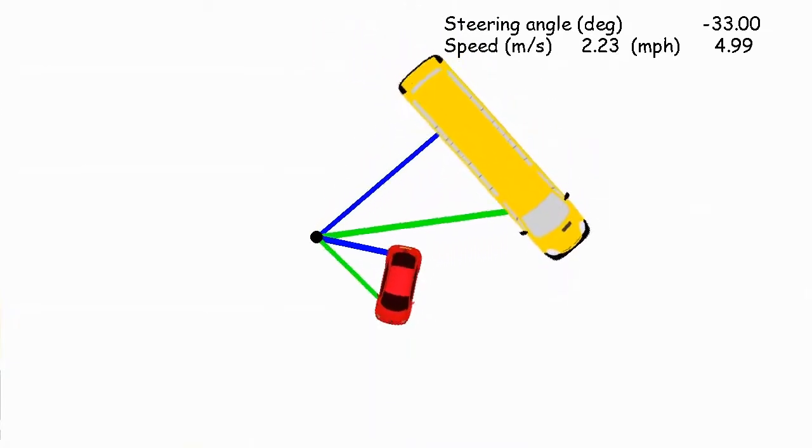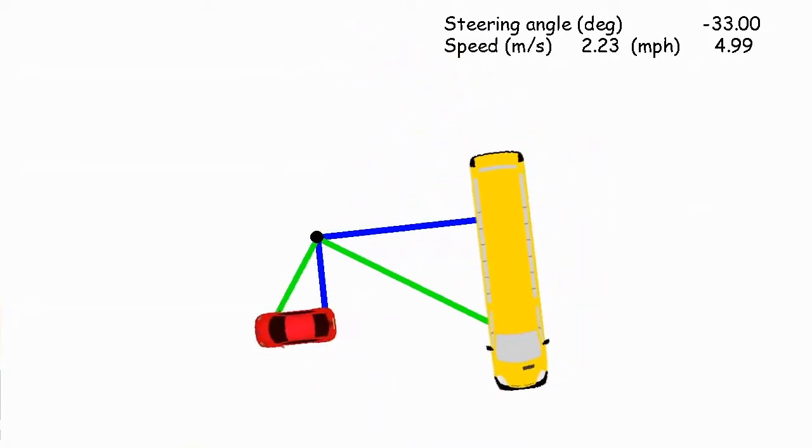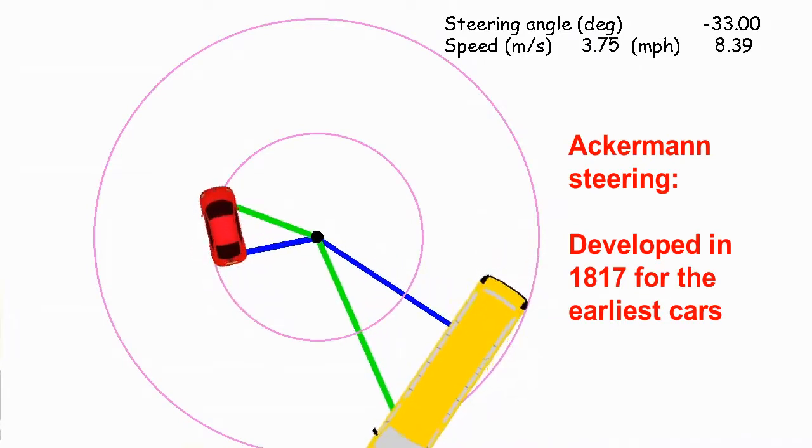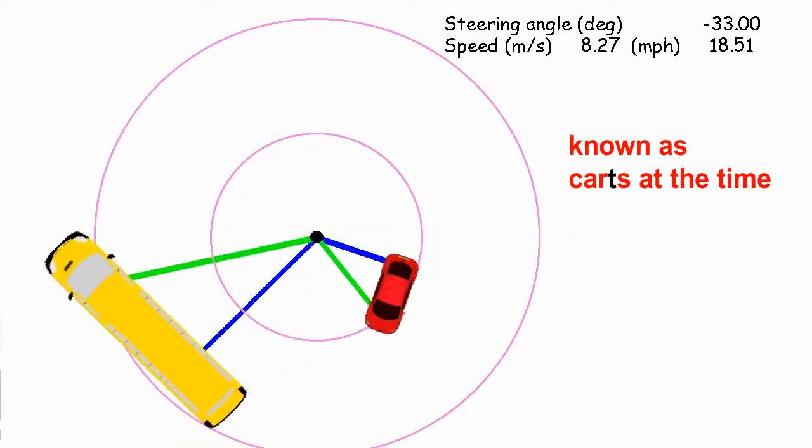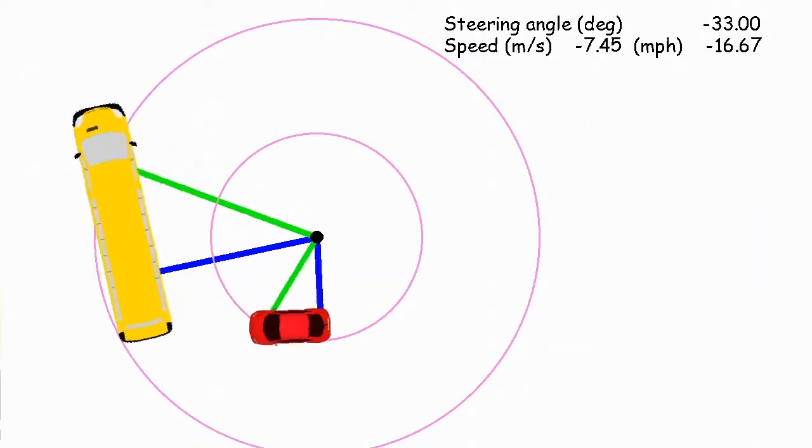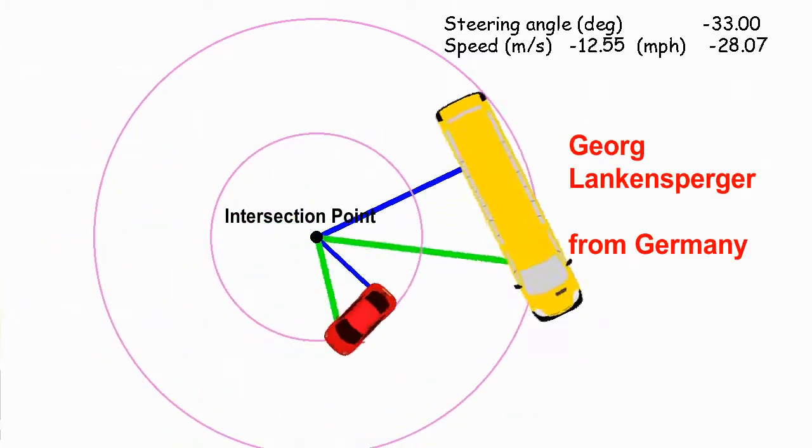Making a car go forward and backwards is pretty easy, but programming it to steer is a little bit more difficult. The way I did it is using something called Ackermann Steering. With Ackermann Steering, we take the front axle and the rear axle and we intersect them at a point, and the car is going to rotate about that point.